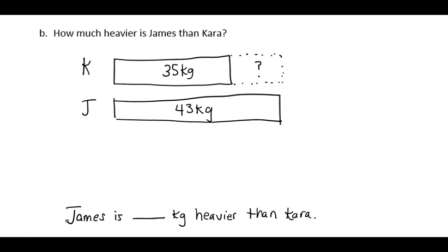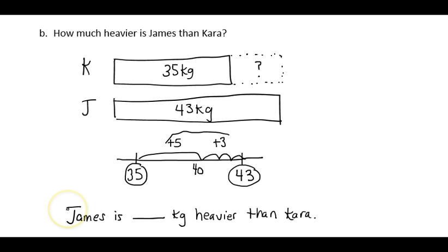To subtract 43 minus 35, I'm actually going to do this on a number line. One way to show the difference between two numbers is to add up on the number line. So if I start at 35, and I make a jump of 5 to 40, then I can jump 3 more hops to get to 43. That tells me that the difference between 43 and 35 is 8, and James is 8 kilograms heavier than Kara.